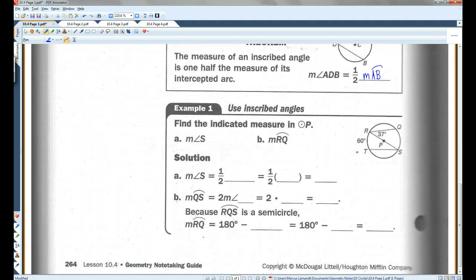So for example, find the indicated measure in circle P. The measure of angle S. So angle S is this angle here. The arc is 60. So the measure of angle S equals one-half arc RT, which is 60 degrees. Half of 60 is 30.